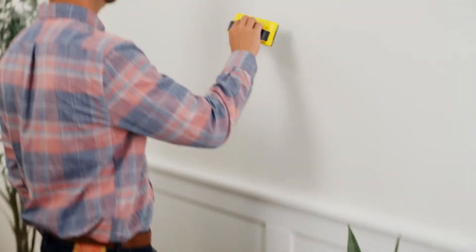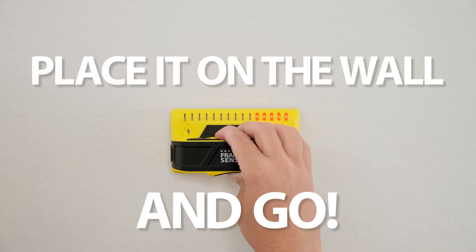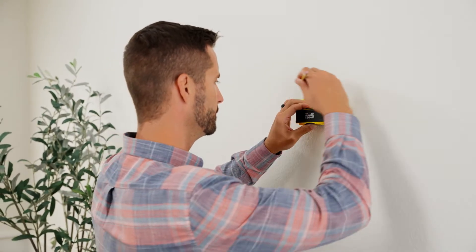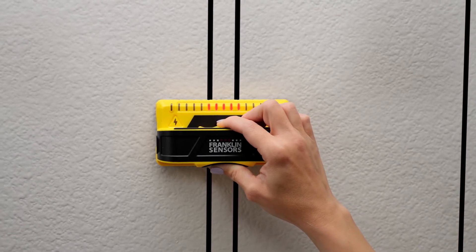To operate the ProSensor M150, simply press and hold the button, then place it on the wall and go. There's no calibration procedure. You can instantly find studs. Once you have it on the wall, the LEDs show you right where the stud is.